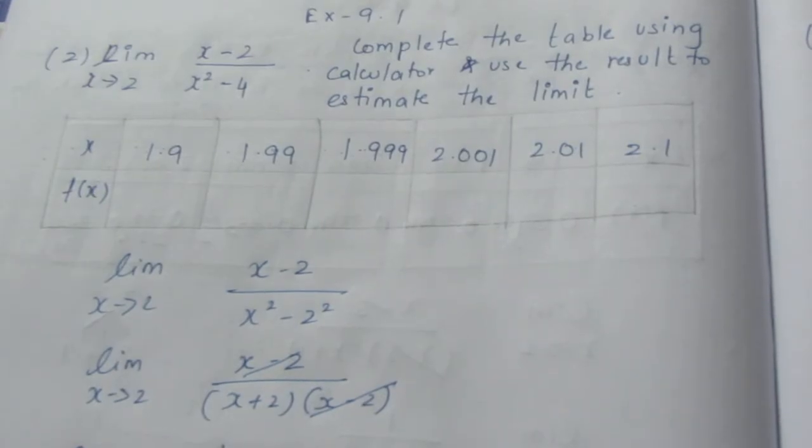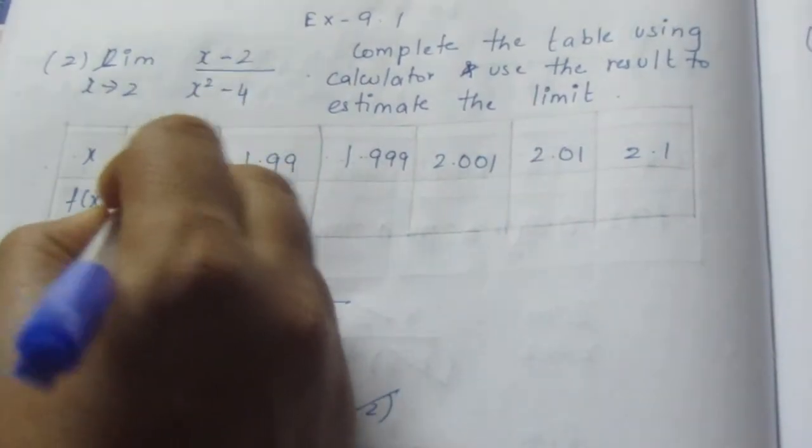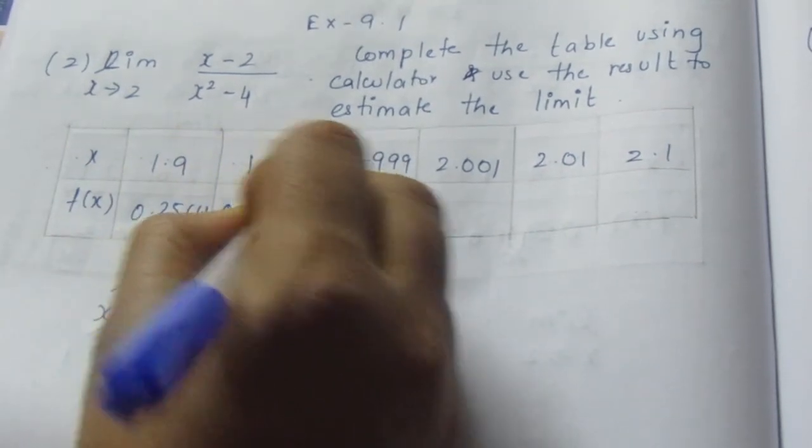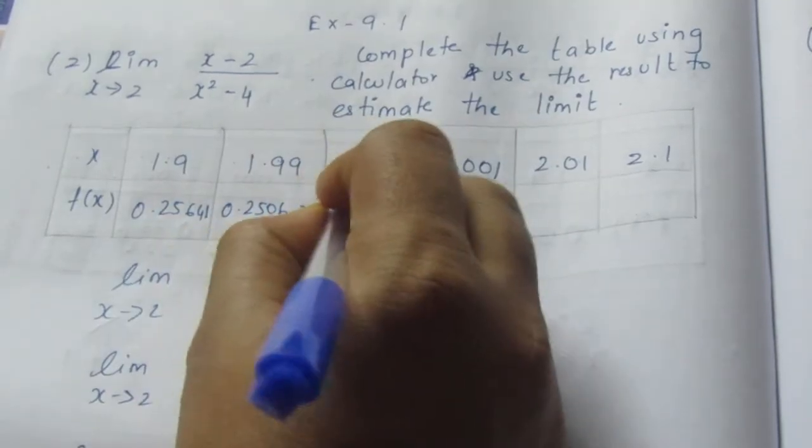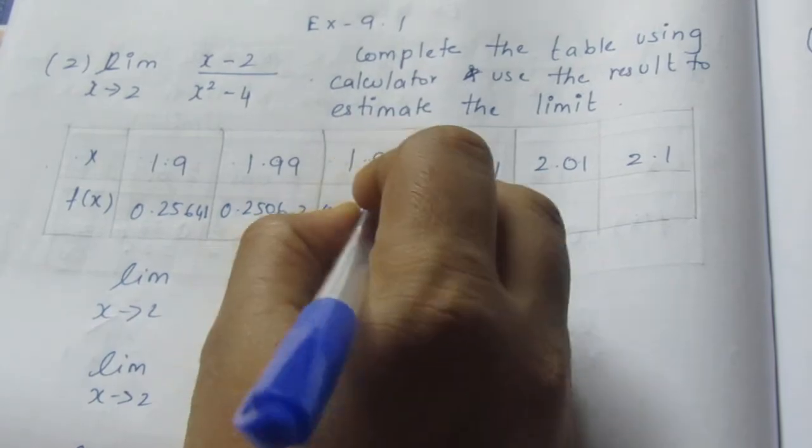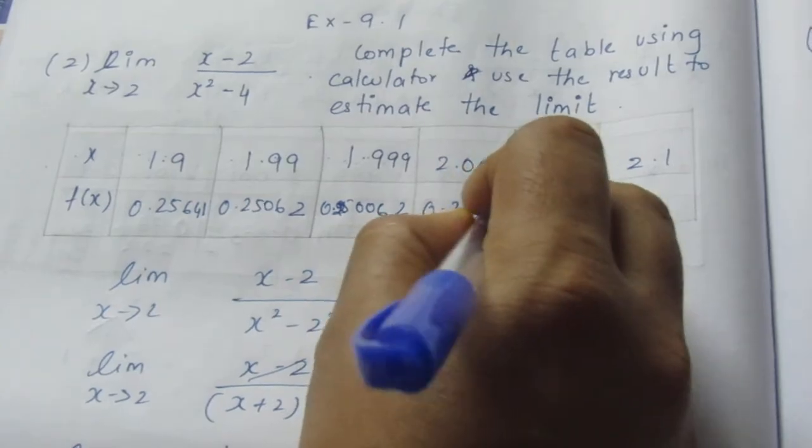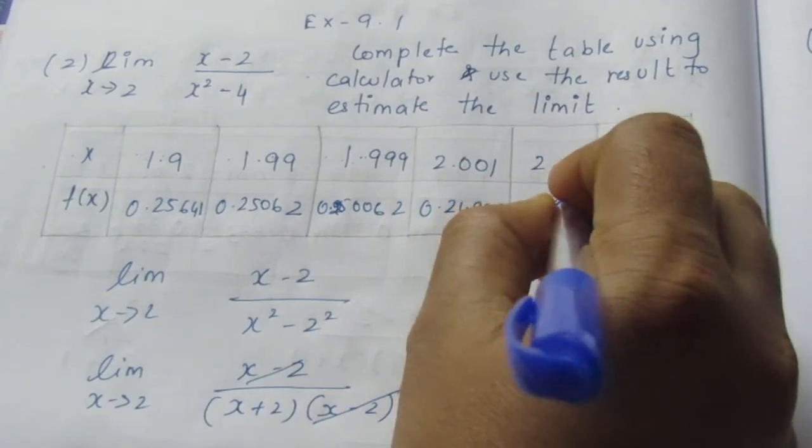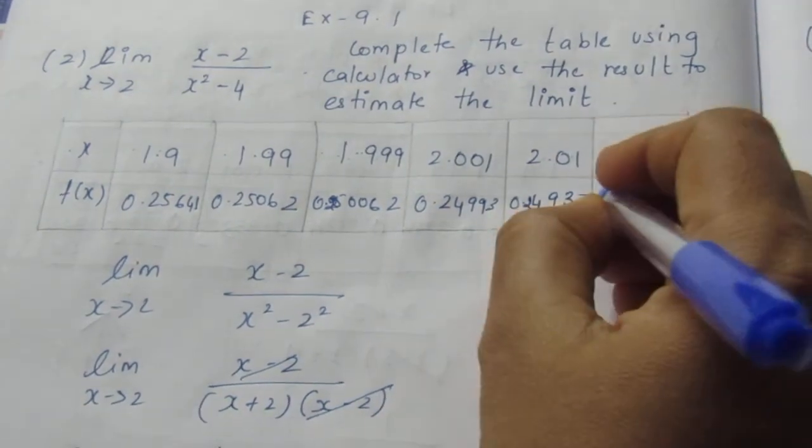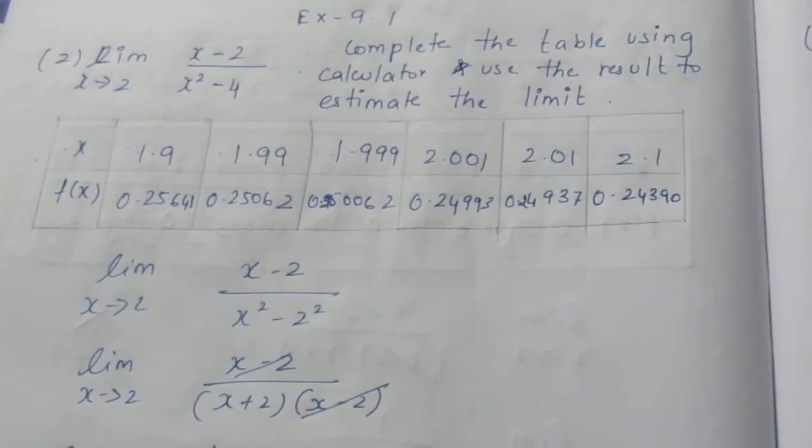Answer is 0.25641. It is 0.25062, 0.250062, 0.24993, 0.24937, 0.24397, 0.24390. So, these are your final answers.